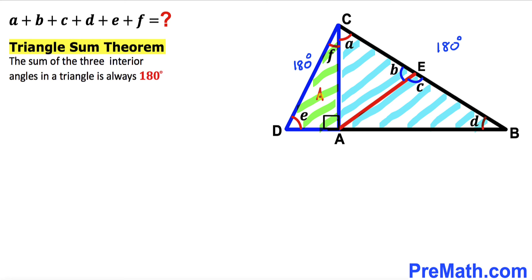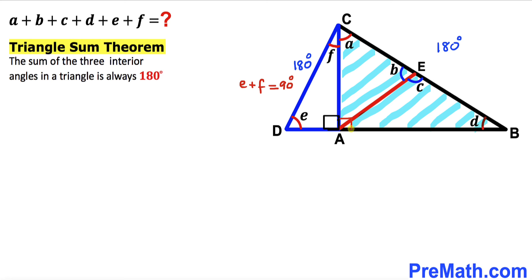Now focusing on triangle ADC: we know this angle is 90 degrees, so the sum of the two remaining angles, E plus F, must equal 180 minus 90, which gives us 90 degrees. Likewise for right triangle ABC: we know that angle is 90 degrees, so the sum of the two other angles, A plus D, must also equal 90 degrees. So A plus D equals 90 degrees.